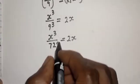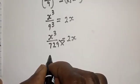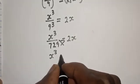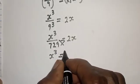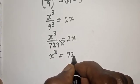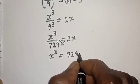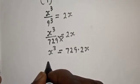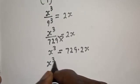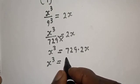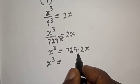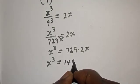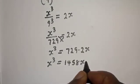Now let's cross multiply. x raised to the power of 3 is equal to 729 multiplied by 2x. We have 1458x.